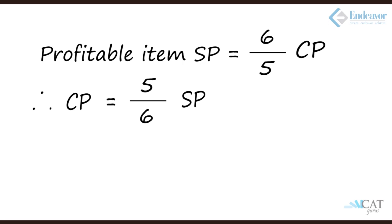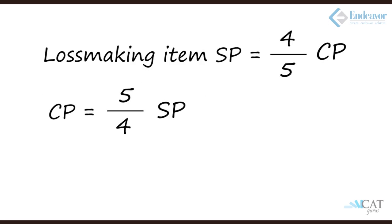What about the loss-making item? The selling price is 4/5 × CP, so CP = 5/4 × SP. So here the SP remains the same and CP changes. In the earlier case, CP remained the same and SP changed.